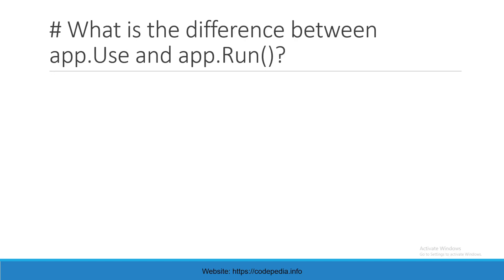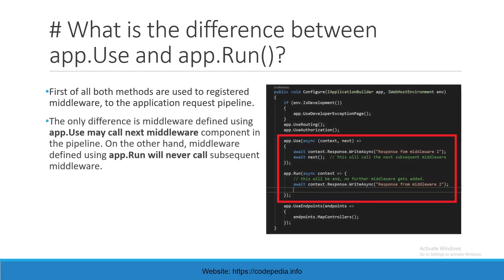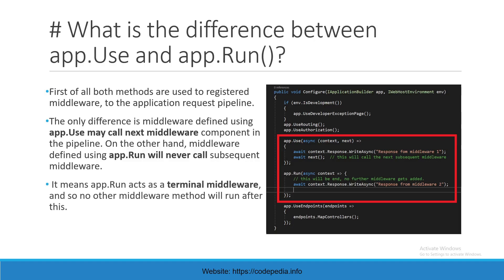Next question: What is the difference between app.Use and app.Run? First of all, both methods are used to register middleware to the application request pipeline. The only difference is middleware defined using app.Use may call the next middleware component in the pipeline, whereas middleware defined using app.Run will never call a subsequent middleware. In short, app.Run acts as a terminal middleware, so no other middleware will run after it.